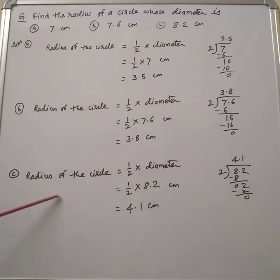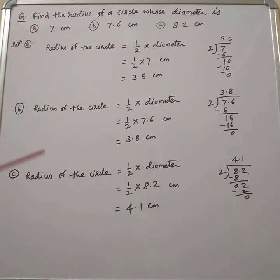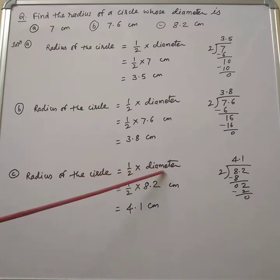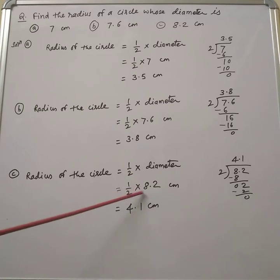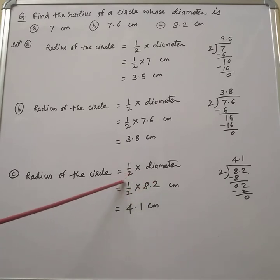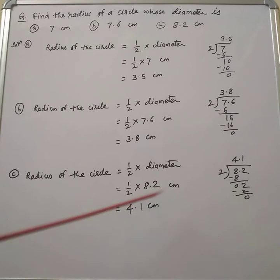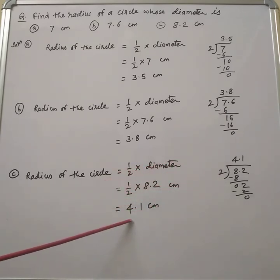Now another example: the diameter of a circle is given as 8.2 centimeters. The radius of the circle is equal to half into diameter, so half into 8.2 centimeters. We have to divide 8.2 by 2, and the answer is 4.1 centimeters.